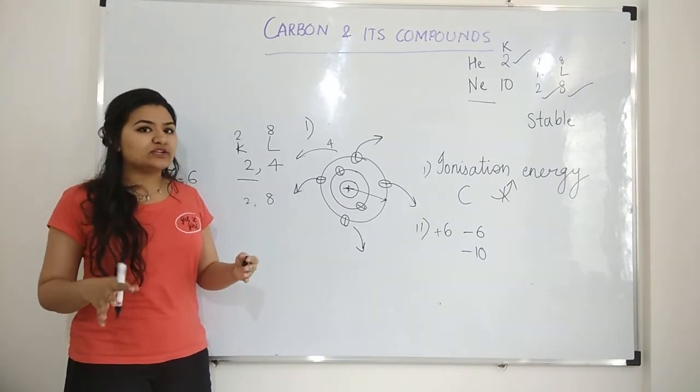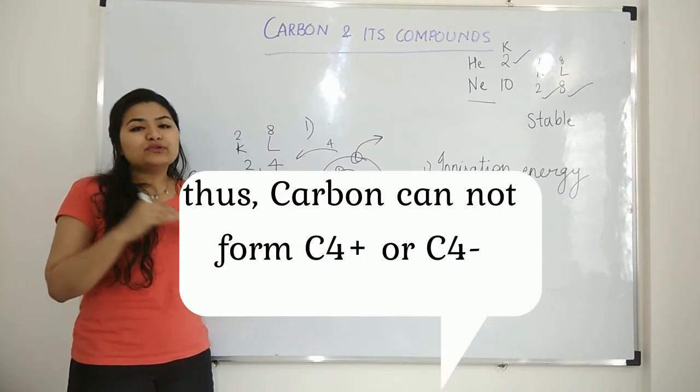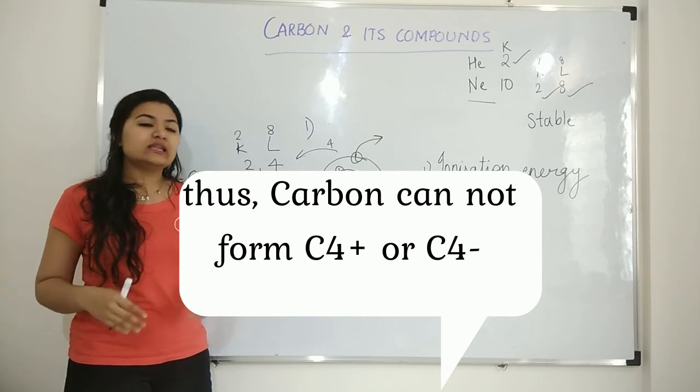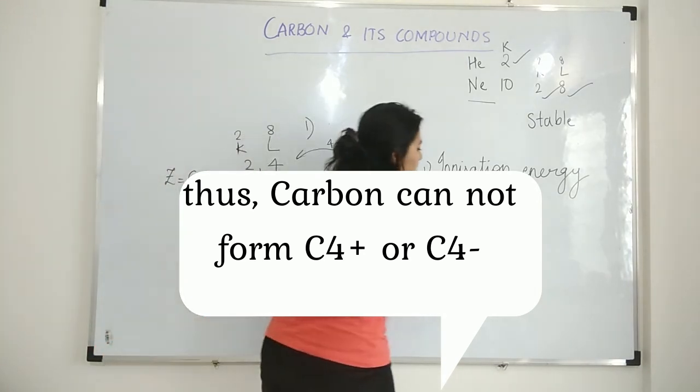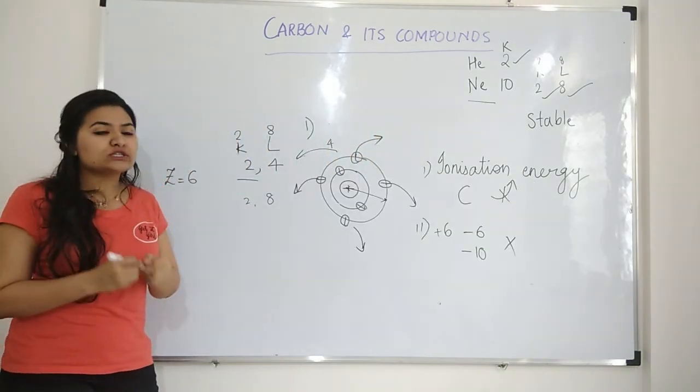One electron taken in is manageable. Even two is manageable. But four electrons taken in will burden the nucleus. And that is not possible again. So both the cases are not possible.